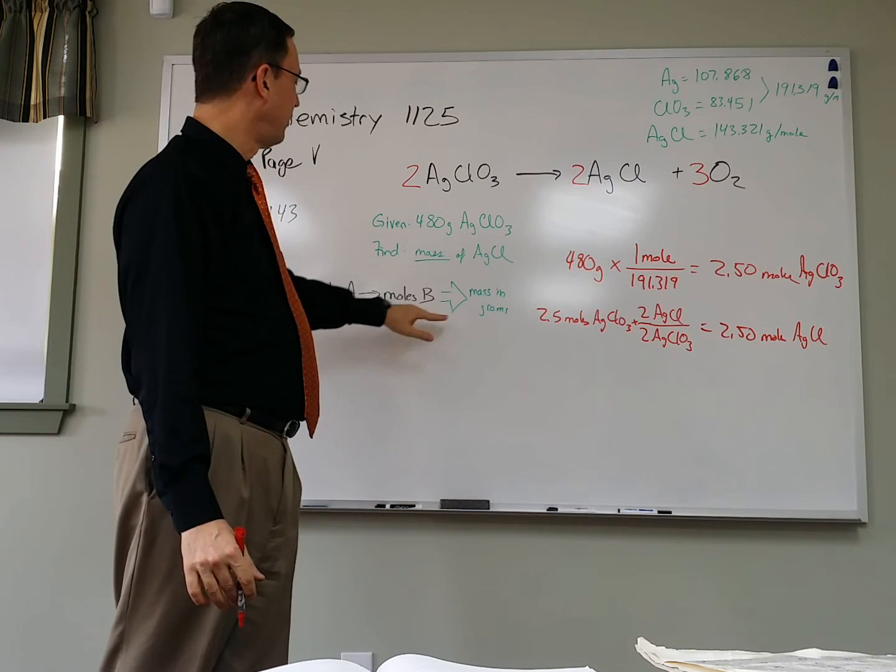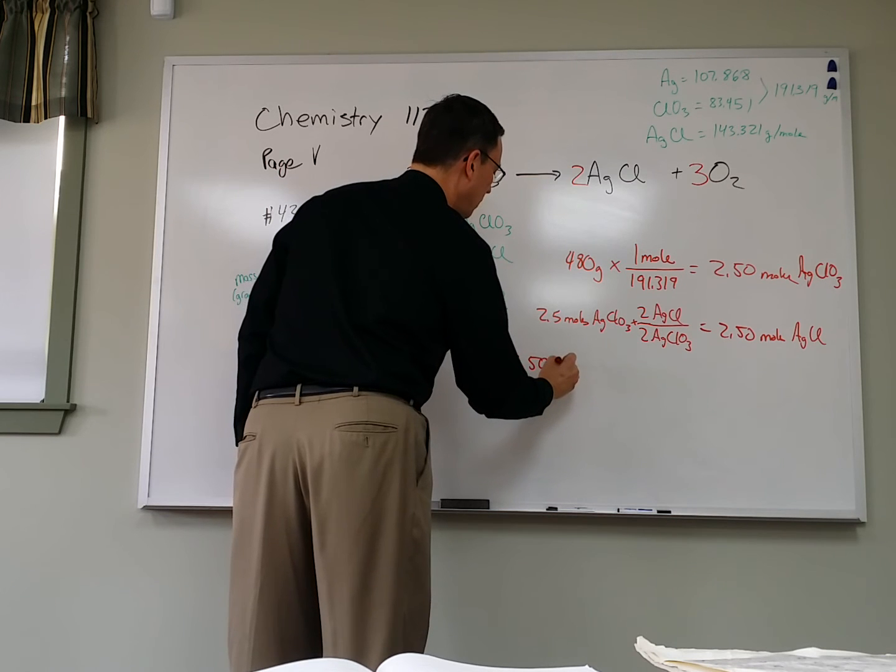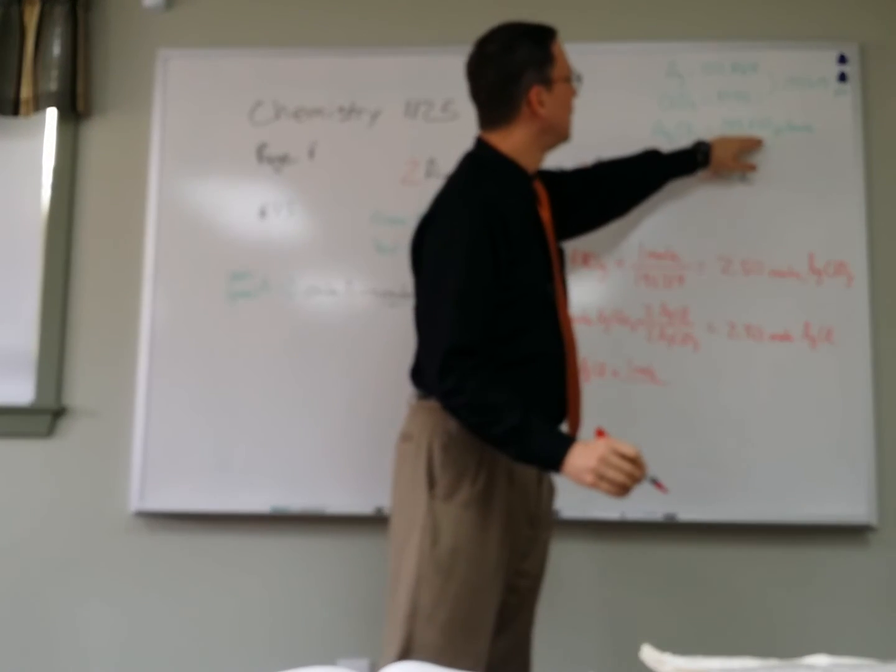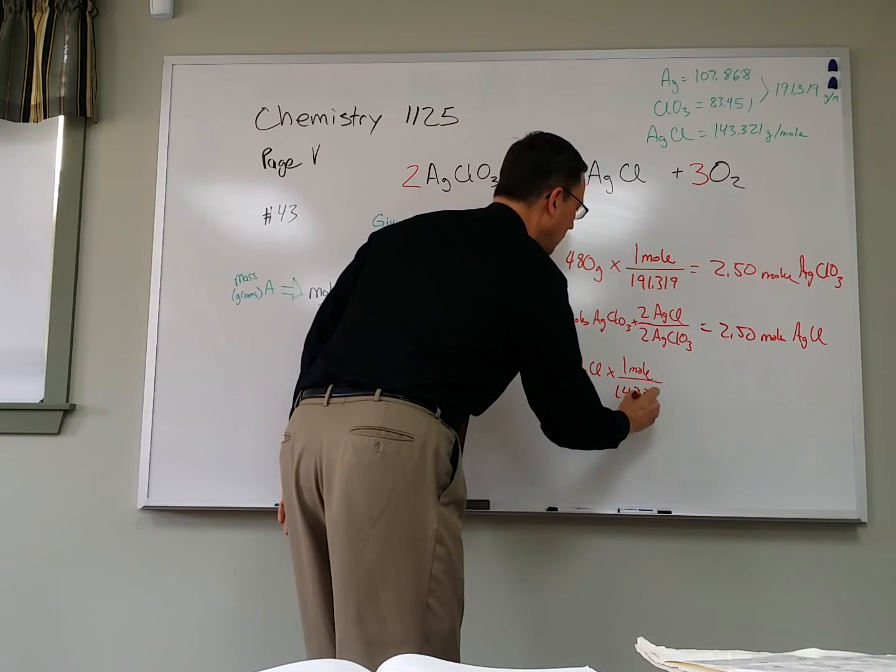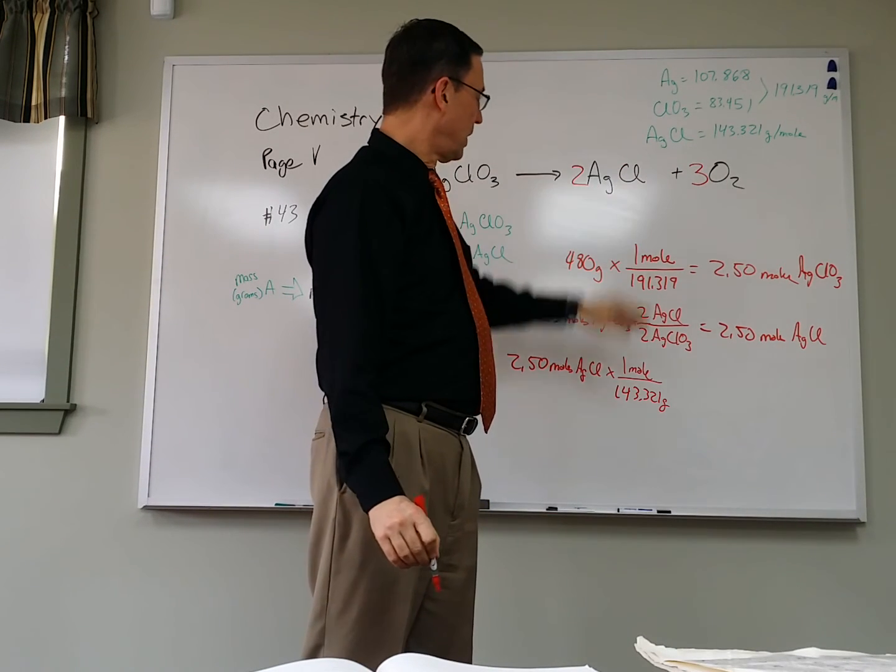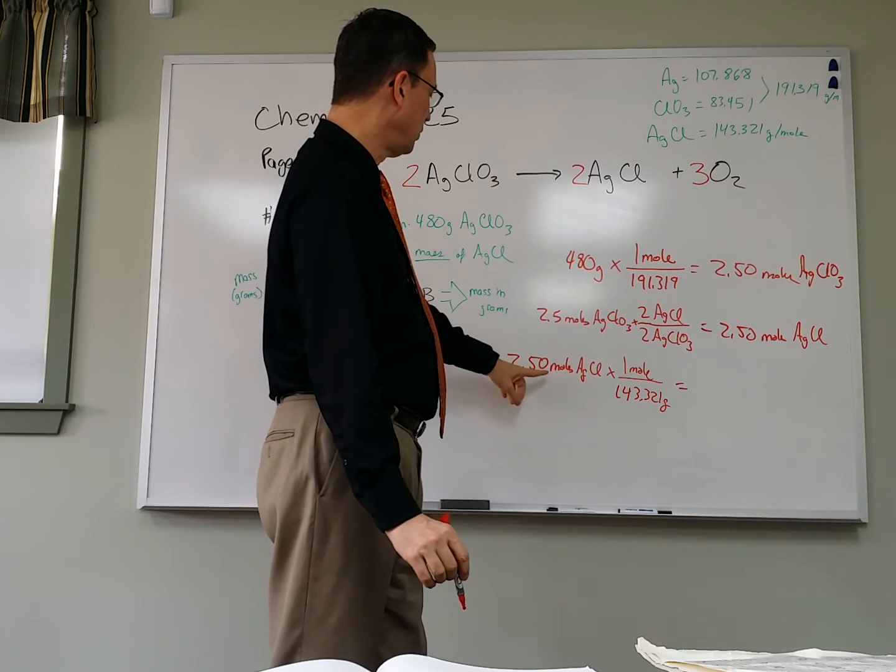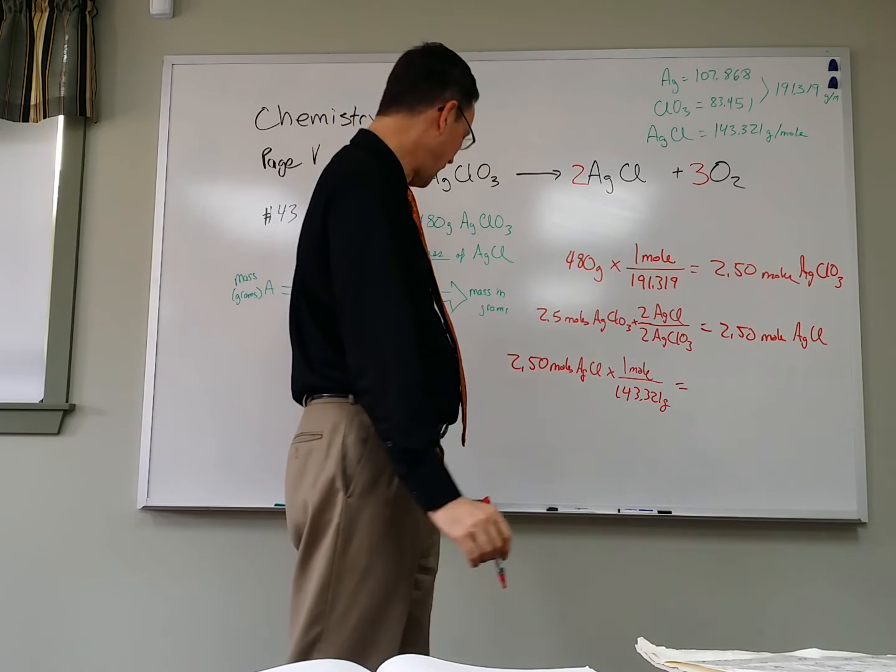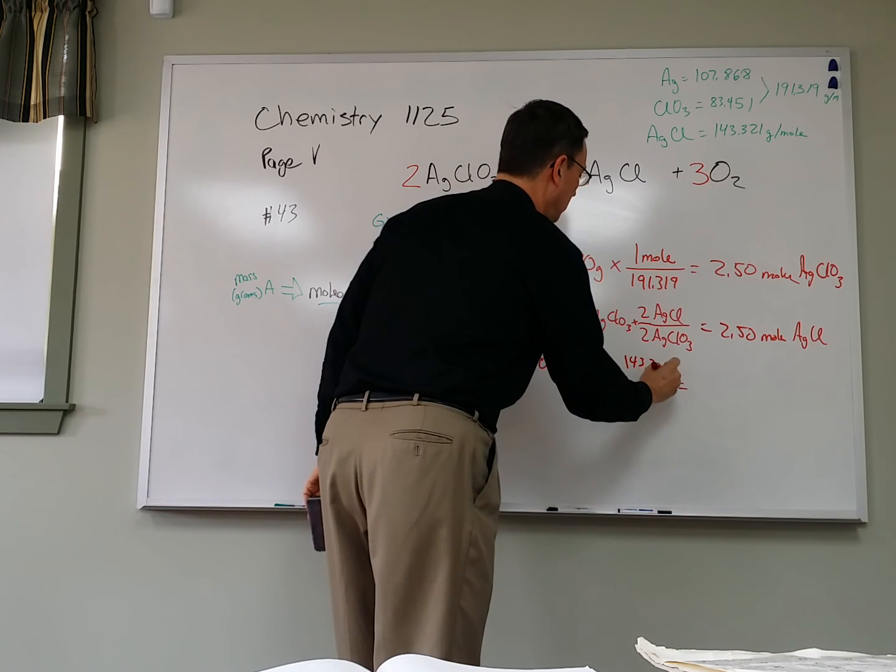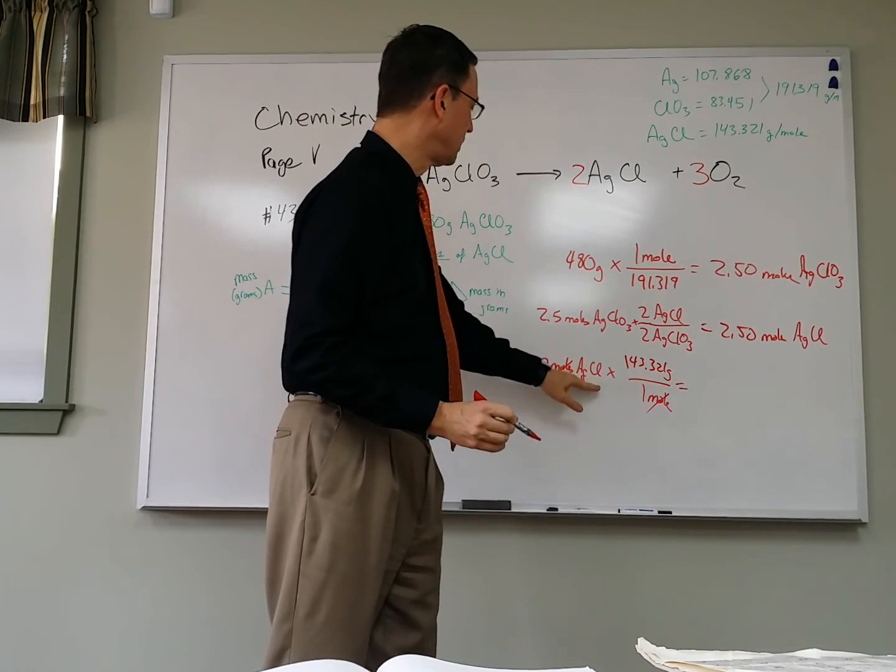However, this problem says we need to go one step further, take the moles that we just found, convert it into mass. So one last step, 2.5 moles, and one mole of AgCl is 143.321 grams. So each mole, and again, you can find that by just adding the chlorine's mass plus the mass of the silver. You get 143.321. And then when we multiply, actually I did that wrong. Because as I'm starting to do this, I'm realizing, wait a minute, that's going to give me moles squared. And I don't want moles squared. So let's write this as the mass on top over one mole. There we go. And that way moles will cancel moles, and the answer will come out in grams of AgCl.